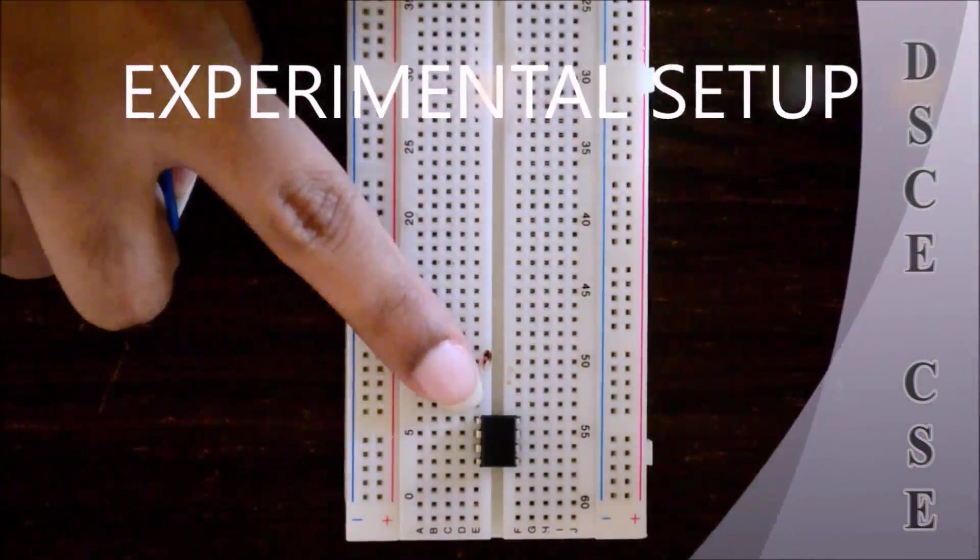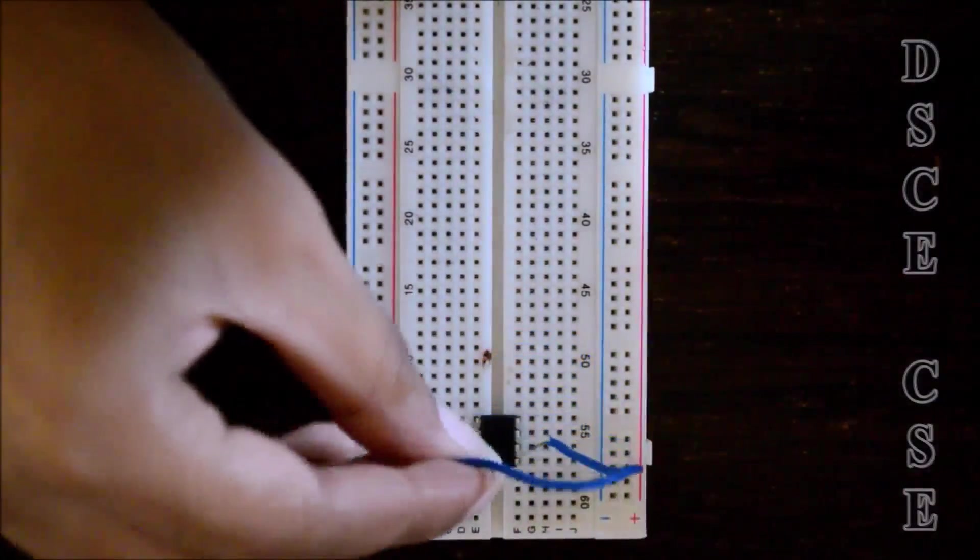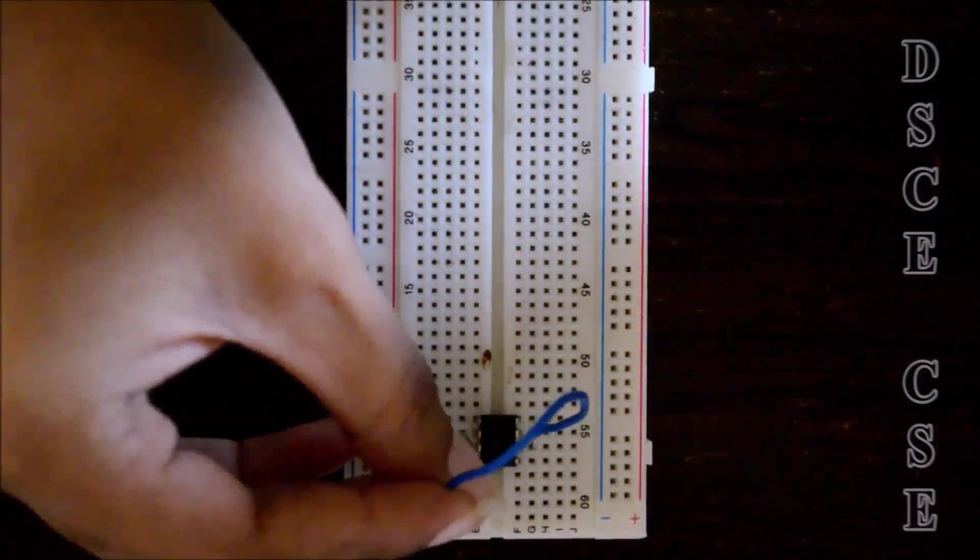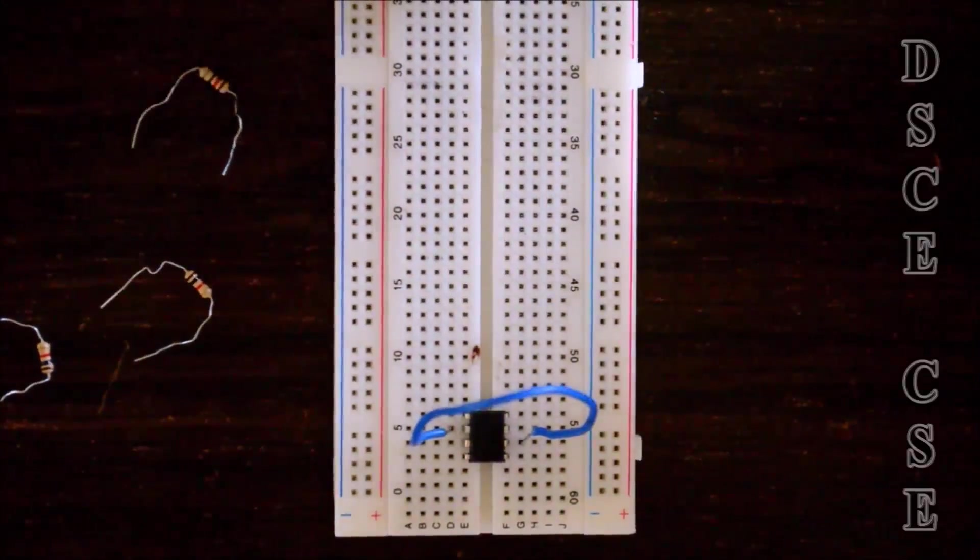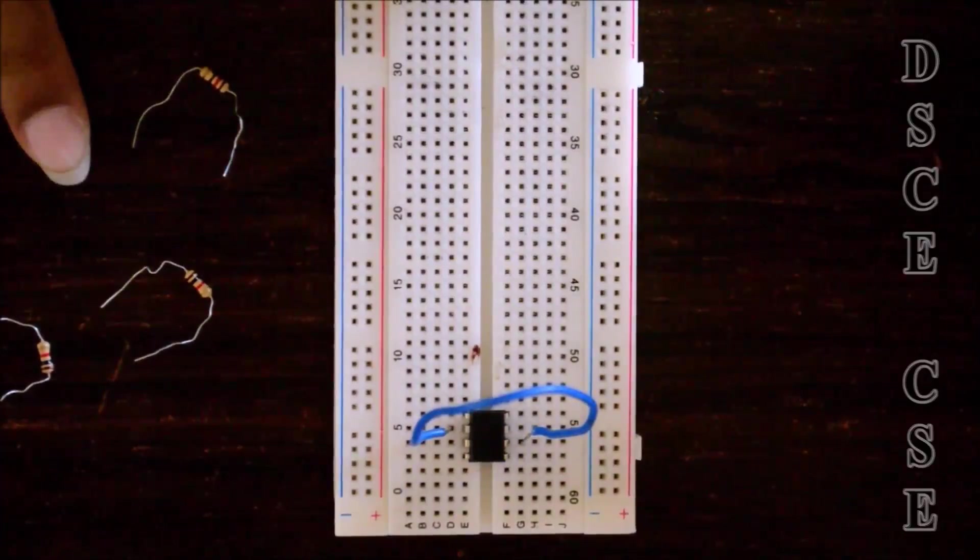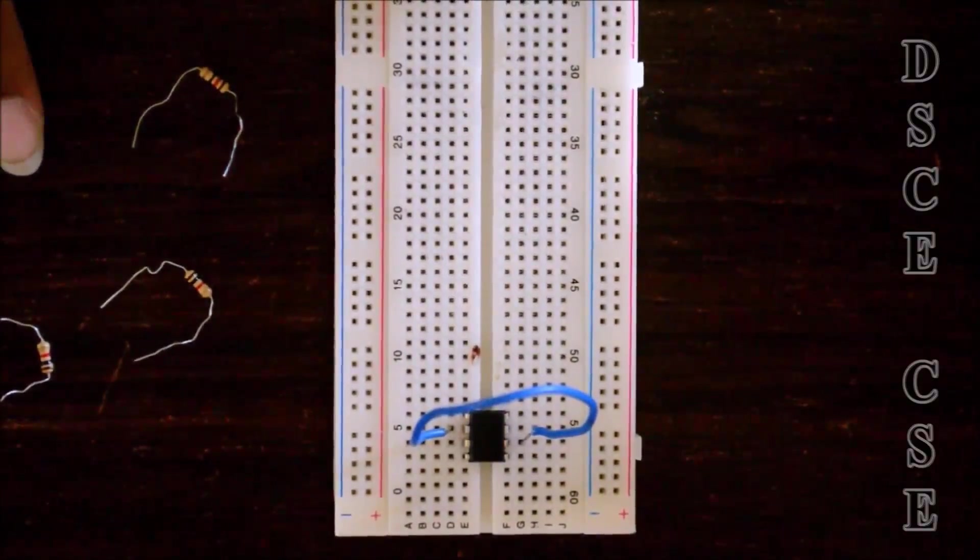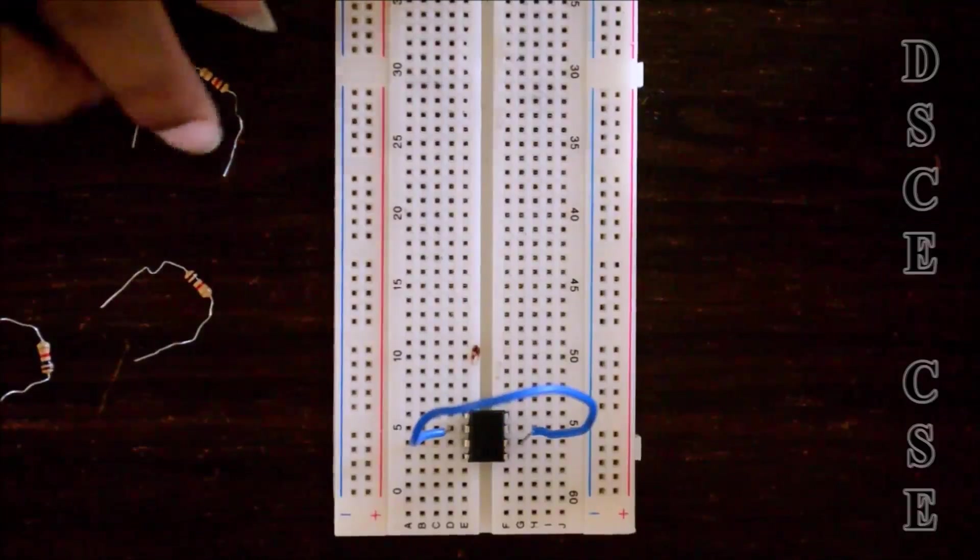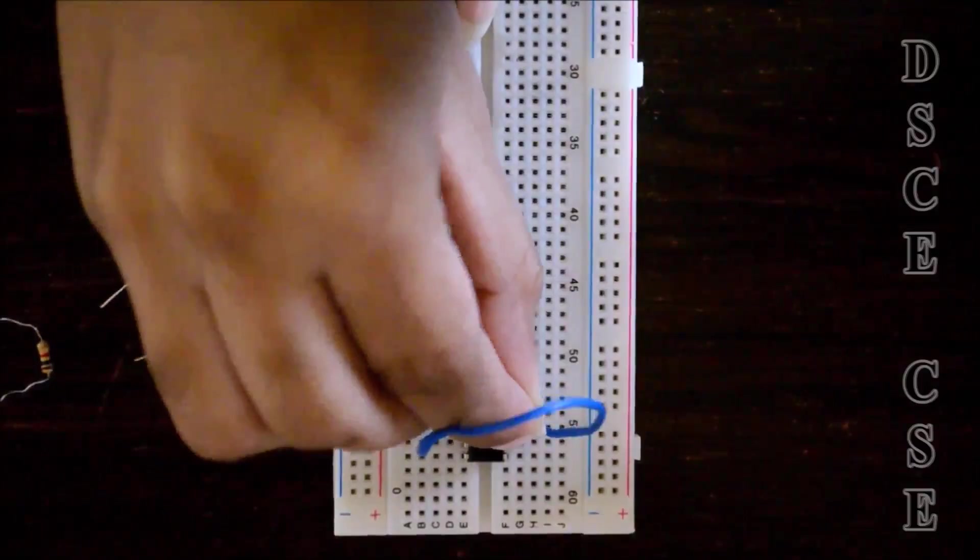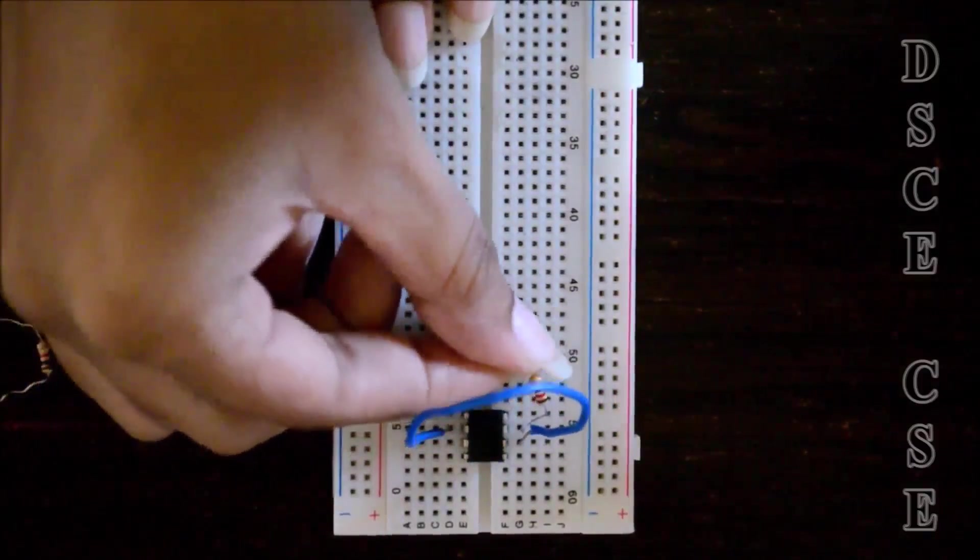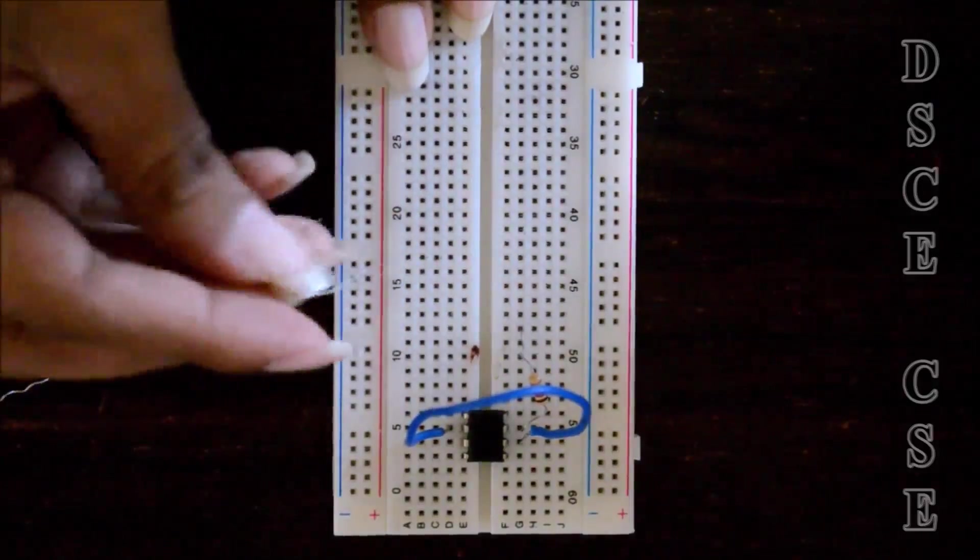First, we take a 741 IC. We are going to short the second and the sixth pin, so pin 2 to pin 6. We need three 1 kilohm resistors, which we are going to be connecting serially from pin 3 of the 741 IC. From pin 3, on the same line, we are going to be connecting the end of the resistor.